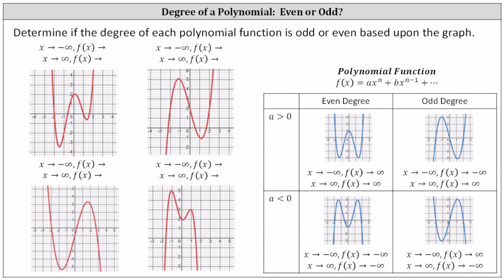Referring to our notes, if the polynomial function has an even degree and the leading coefficient a is positive, then for both the left and right hand behavior, f of x approaches positive infinity. And if the degree is even and the leading coefficient is negative, then for both the left and right hand behavior, f of x approaches negative infinity.